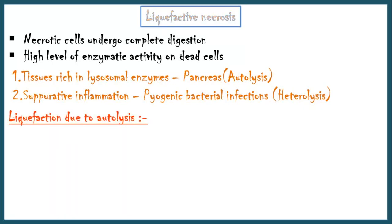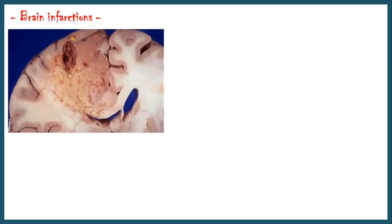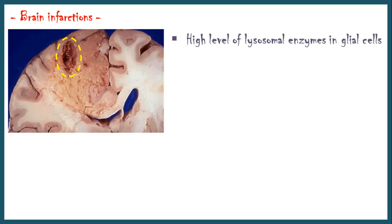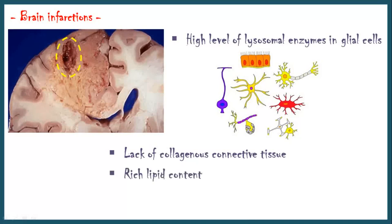Liquefaction due to autolysis is seen in conditions like acute pancreatitis and brain infarctions. In pancreatitis, due to high levels of enzymes, the major digestive method is autolysis. In ischemic necrosis of solid organs the usual outcome is coagulative necrosis; however, in infarctions of brain and spinal cord, the typical outcome is liquefactive necrosis. This is due to the high levels of lysosomal enzymes in glial cells, which also undergo necrosis during the process. In addition, lack of collagenous connective tissue framework in the CNS and rich lipid content may also contribute to the fluidity of necrotic material.